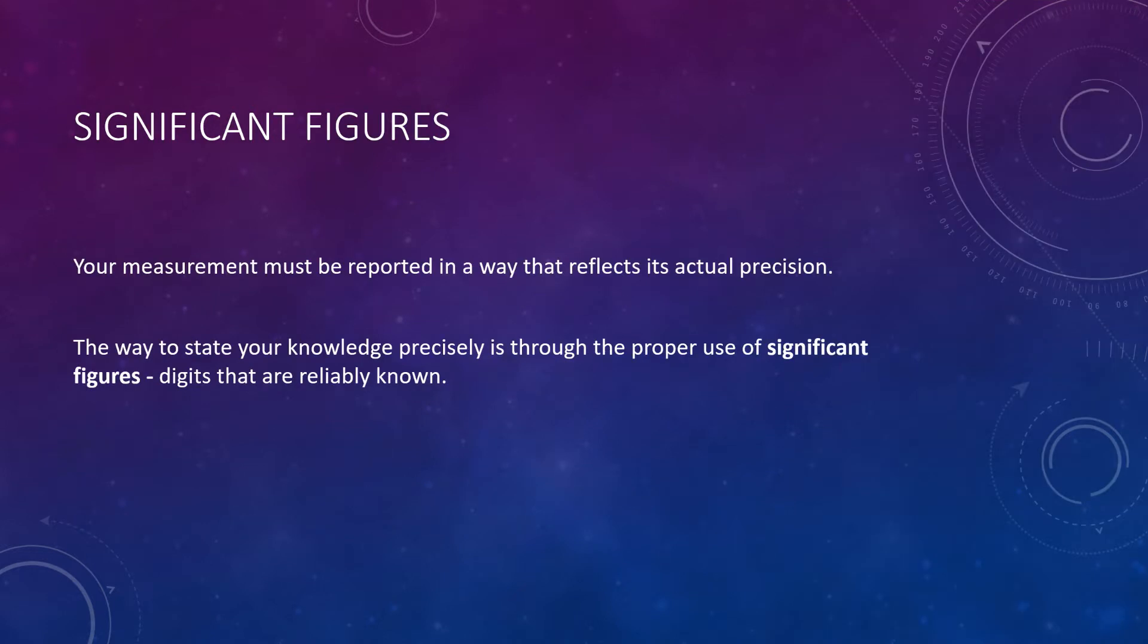So how do we express our precision when we write a number? Well, in this case, we invoke the use of significant figures. When we write numbers, we have to convey our precision. So the way we do this is through significant figures, which are the digits in a number that are reliably known. So, I mean, what does that mean? Let's go ahead and jump right into an example.